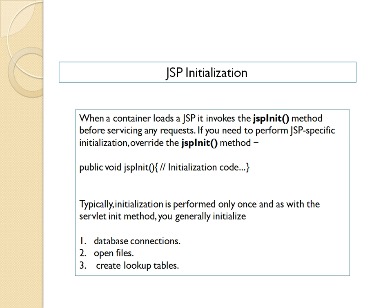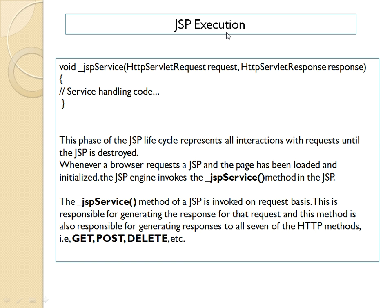After compilation, JSP initialization occurs using the JSP init method. This init method is called only once in the life of the JSP. In this method we typically initialize database connections, open files, and create lookup tables. Then the JSP is executed using the JSP service method, which is similar to the doPost, doGet, or service method of a servlet. It handles all types of HTTP request methods like GET, POST, or DELETE.